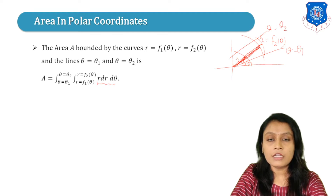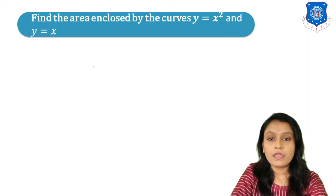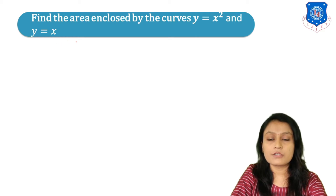In place of dx dy, we now have R dr d-theta, where this R is the Jacobian. Now let us study one example: find the area enclosed by the curves Y equals X squared and Y equals X.